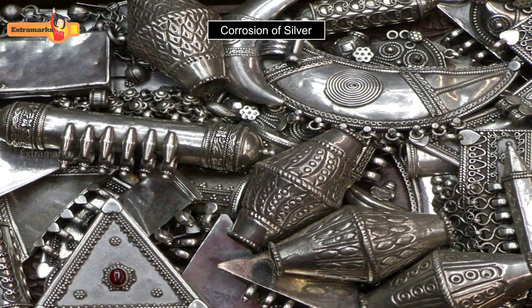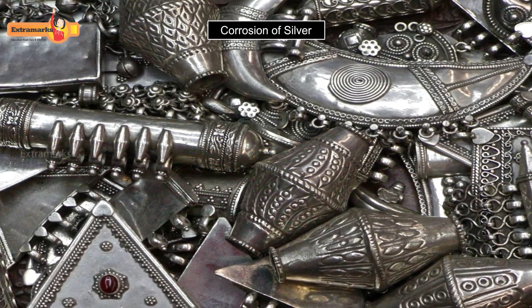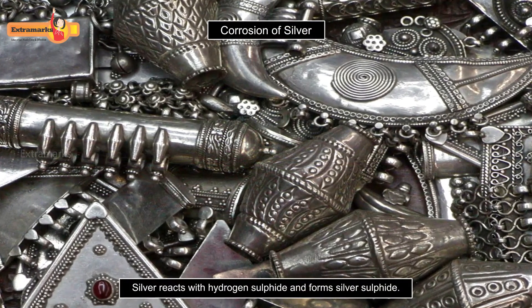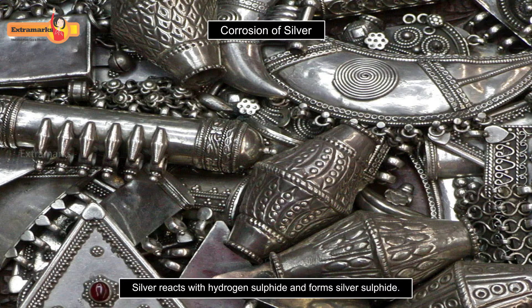Notice that the articles and jewelry made of silver turn black when kept in open for some time. Silver metal tarnishes in presence of hydrogen sulfide gas present in the air, and a black coating of silver sulfide can be seen on its surface.